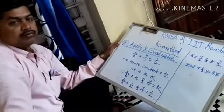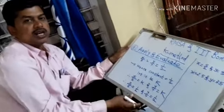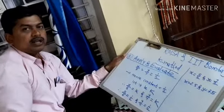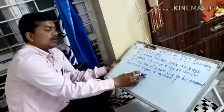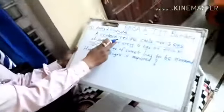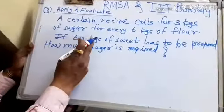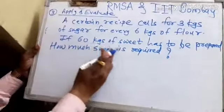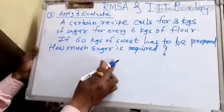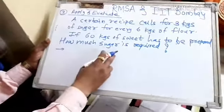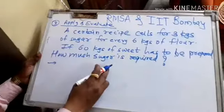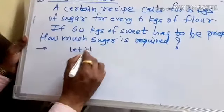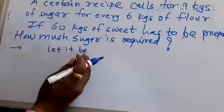Similarly, we will find another missing terms which are not given in the equal ratios. I will give you another example, second example. A certain recipe calls for 3 kilograms of sugar for every 6 kilograms of flour. If 60 kilograms of sweet has to be prepared, how much sugar is required? For this example, we have to find how much sugar is required. So by using the k method of equal ratio, we can easily find this answer. Let it be x. We don't know how much sugar is required, and that amount of sugar I have supposed is x kilograms.